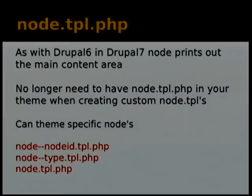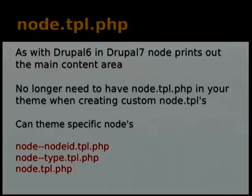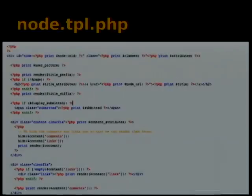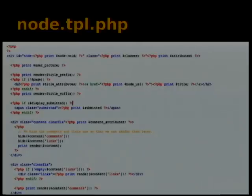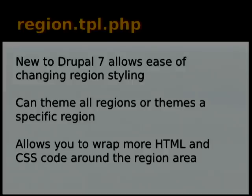Node.tpl.php doesn't have as many changes. It's really doing as it did in Drupal 6 — printing out main content. Of course, as mentioned, you no longer have to include it in your theme when creating custom content types. The naming conventions are: node-dash-node-ID for a specific node, node-dash-type, and node.tpl. We can also see the new way to print content fields using hide and render.